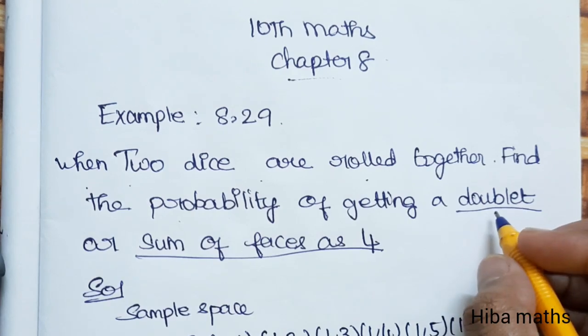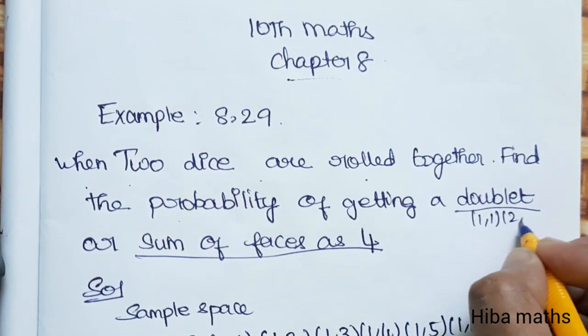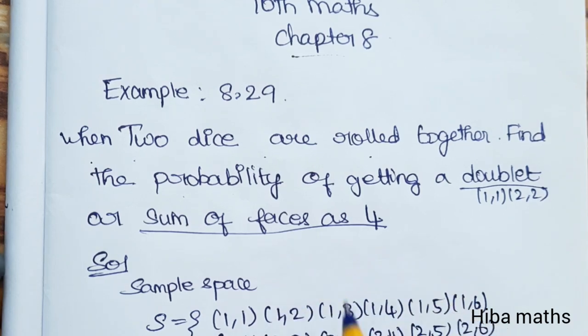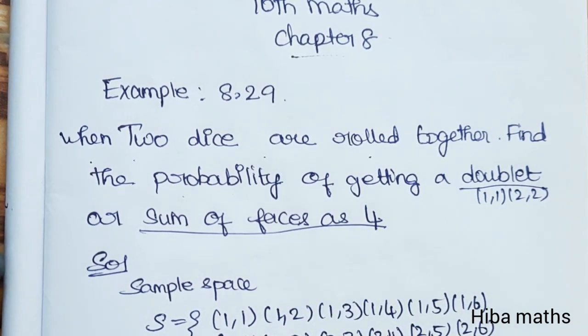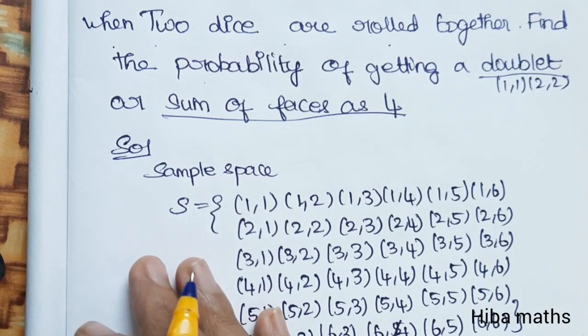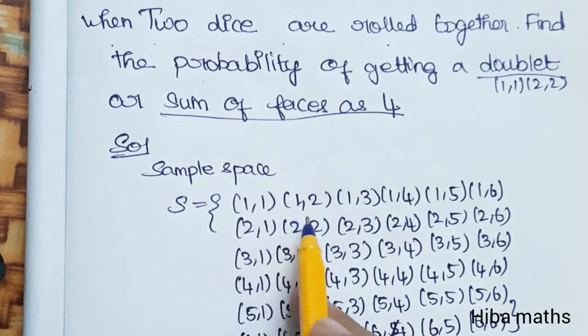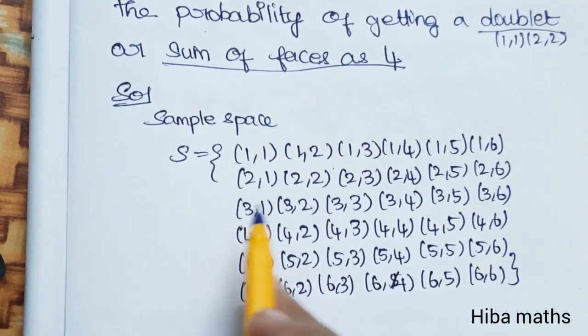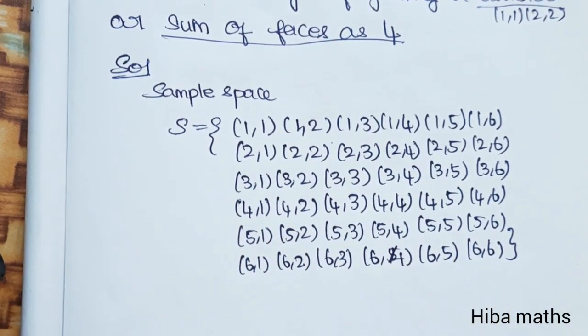Doublet is when we get one number twice, like 1,1 or 2,2. Sum of the faces as 4 means when we add the two numbers, we get 4. The sample space for rolling two dice is 1,1, 1,2, 1,3... all the way to 6,6.